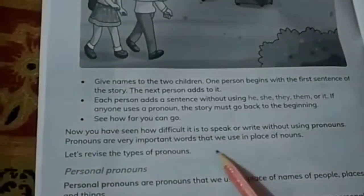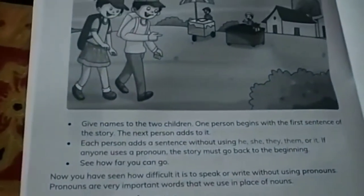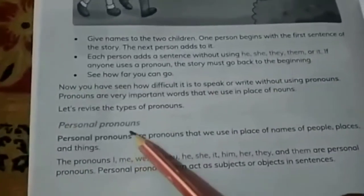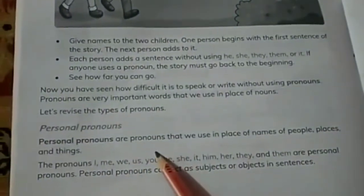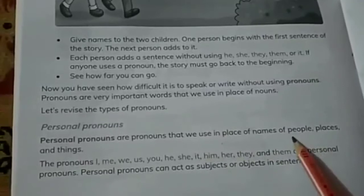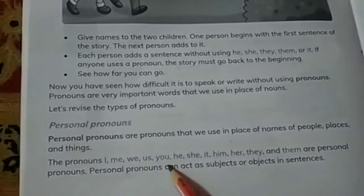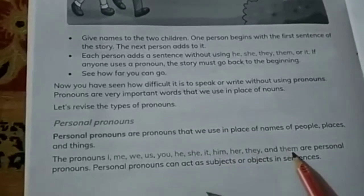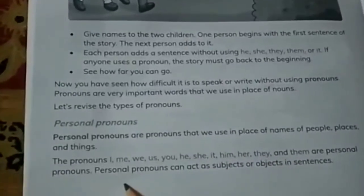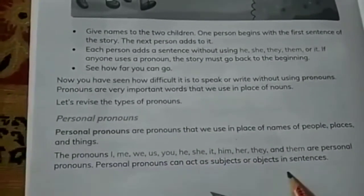It's been mentioned here that it is not possible to make a sentence without using pronouns. Now let's move forward and revise the types of pronouns. Personal pronouns are pronouns that we use in place of names of people, places, and things. The pronouns I, me, we, you, us, he, she, it, him, her, they, and them are personal pronouns. Personal pronouns can act as subject or object in a sentence.